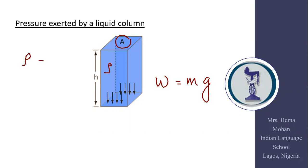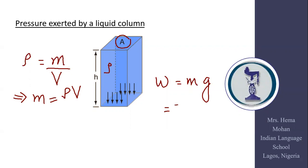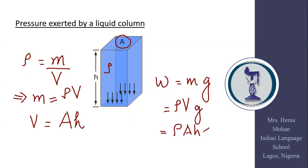Let us assume the density of the liquid is ρ. If the density is ρ, the mass of the liquid is m, and the volume is V, then density ρ equals m divided by V, which implies mass m equals ρ times V. The volume of the container is base area times height, so V equals A times h. Replacing m, we get the weight W equals ρ·A·h·g, which is the thrust acting on the base of the vessel.